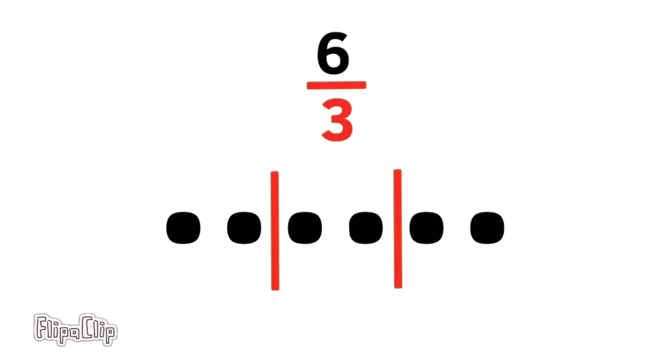Now imagine those six units divided by three, or six units divided into three groups. That would be two units in each group. So six divided by three equals two.